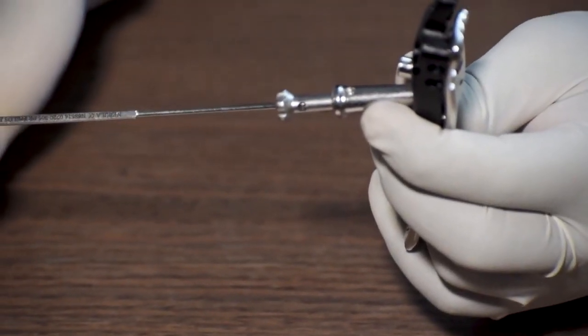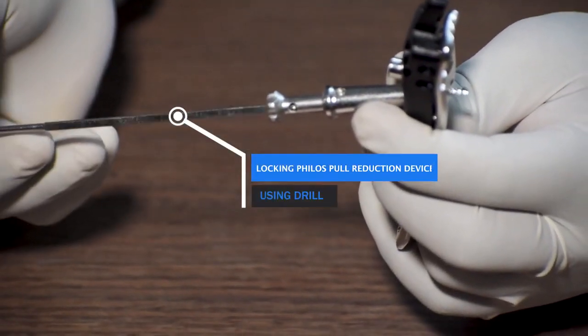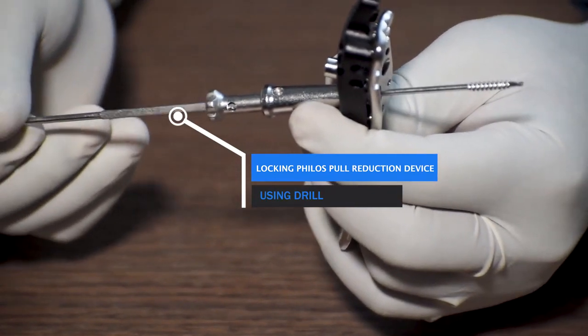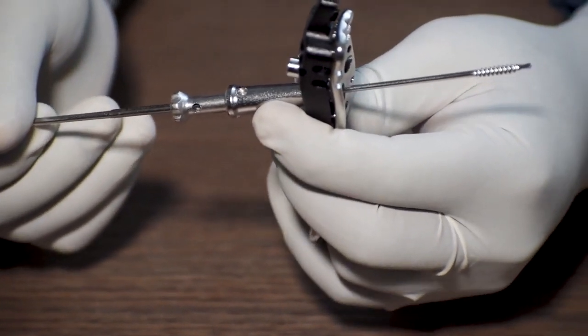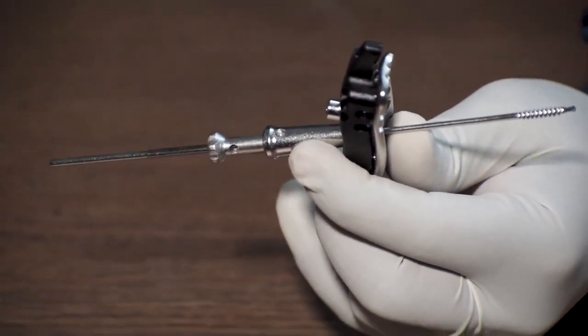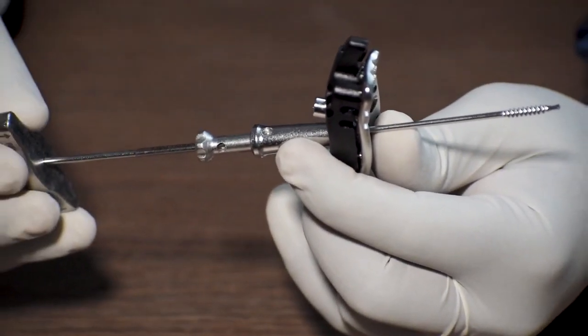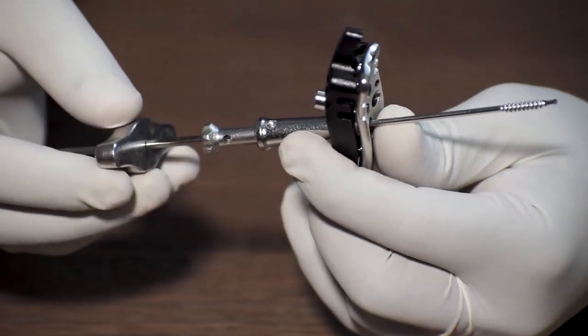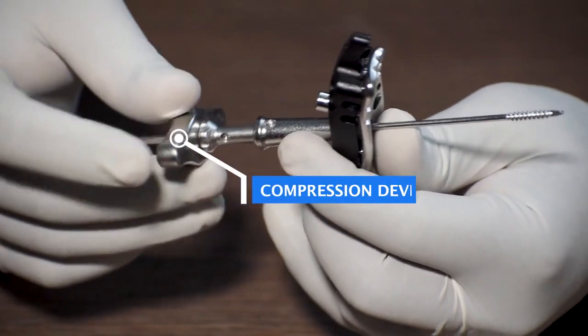Thereafter with the help of a drill, we will lock the Phyllos pull reduction device in the proximal part of the head region of the plate. Thereafter we will attach the compression device in this Phyllos pull reduction device.